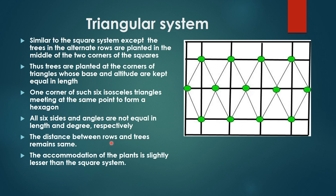The distance between rows and trees remains the same — just like the square system. The accommodation of plants is slightly lesser than the square system. In this triangular system, plant accommodation is lower than in the square system, so that may be a reason for loss of income if farmers adopt the triangular system over the square system of fruit planting.